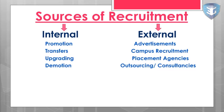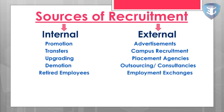Internal sources also include upgrading — giving employees a small increment or upgrading their grade pay and offering them a new job. Demotion is another internal source — if an employee is not working properly at a higher designation, we can demote them to a lower designation. External sources include outsourcing and consultancies — some big companies outsource their HR department to consultancies, which recruit candidates on behalf of the company as a third party.